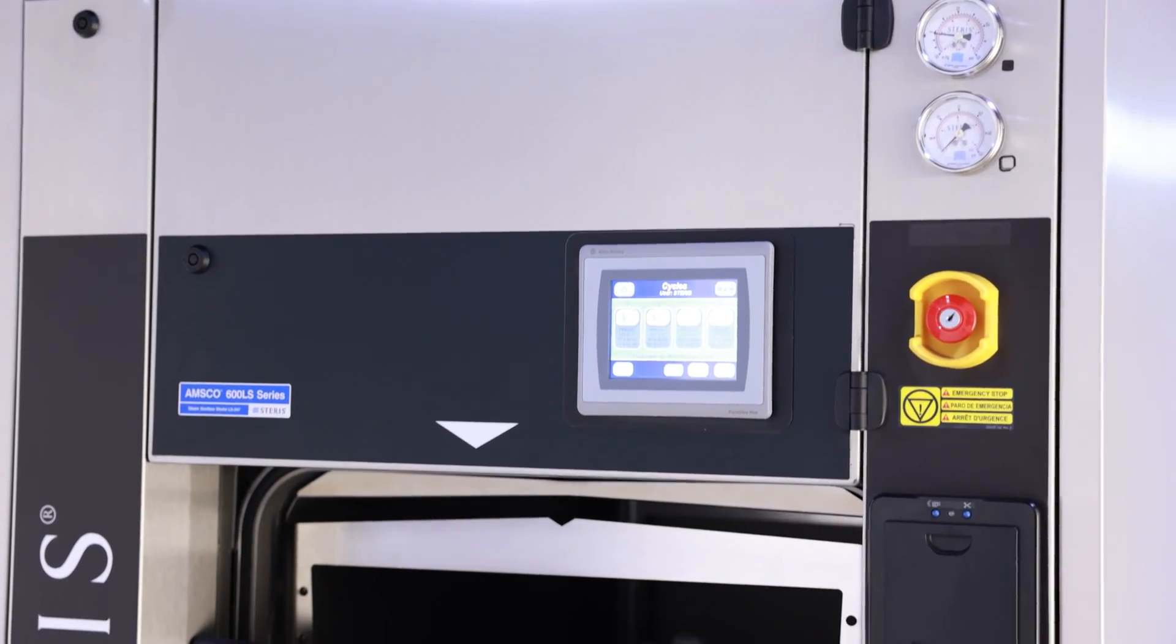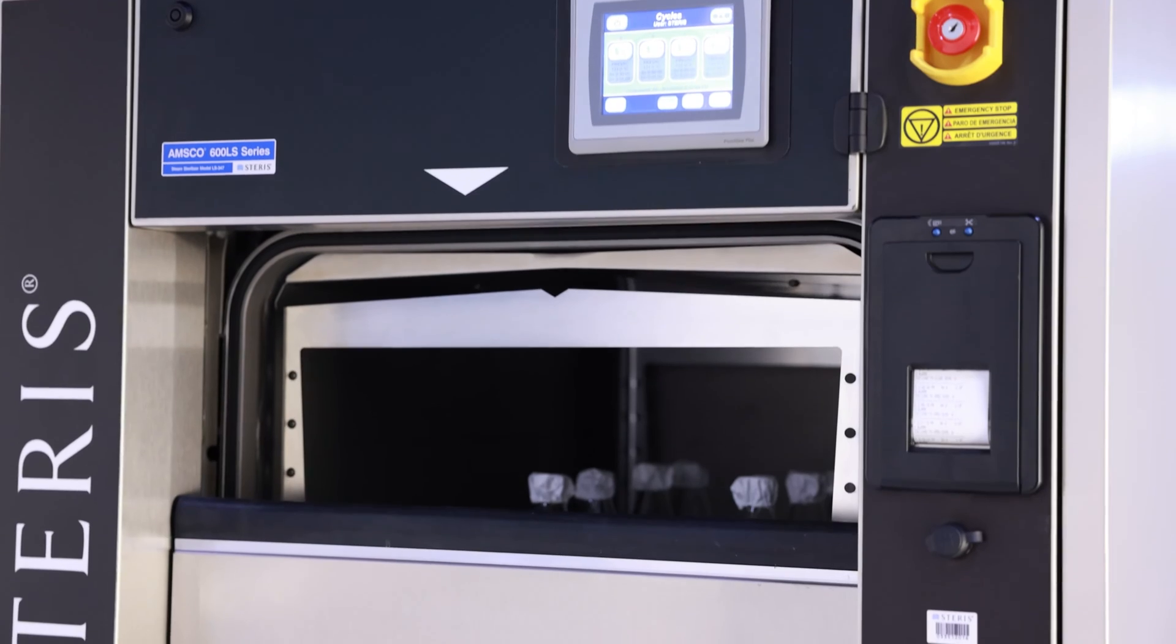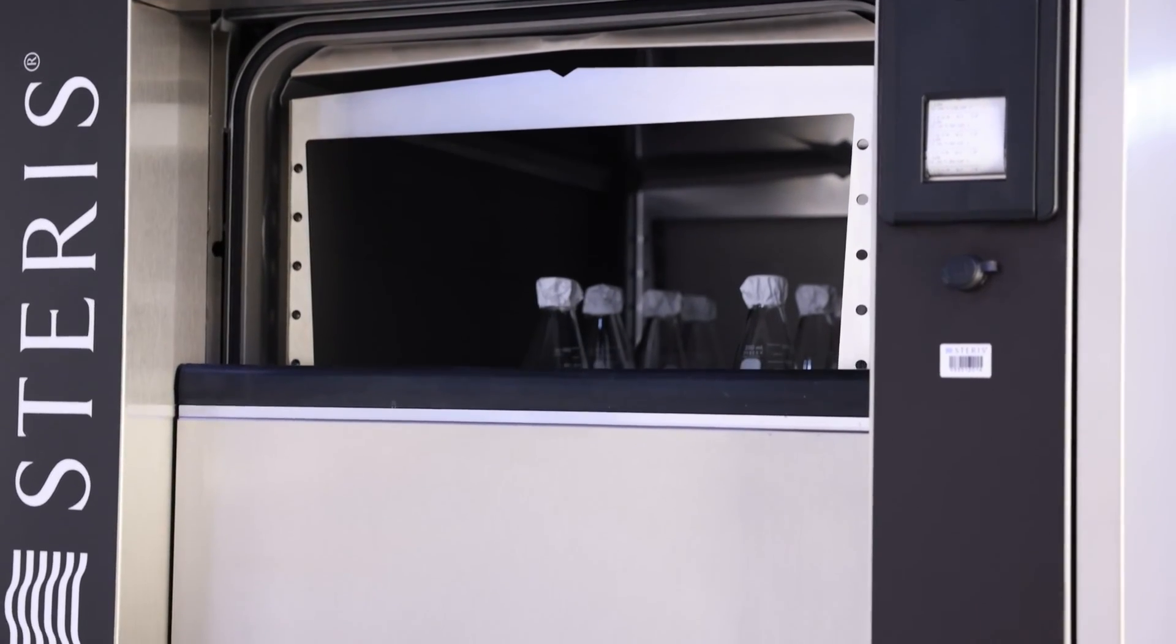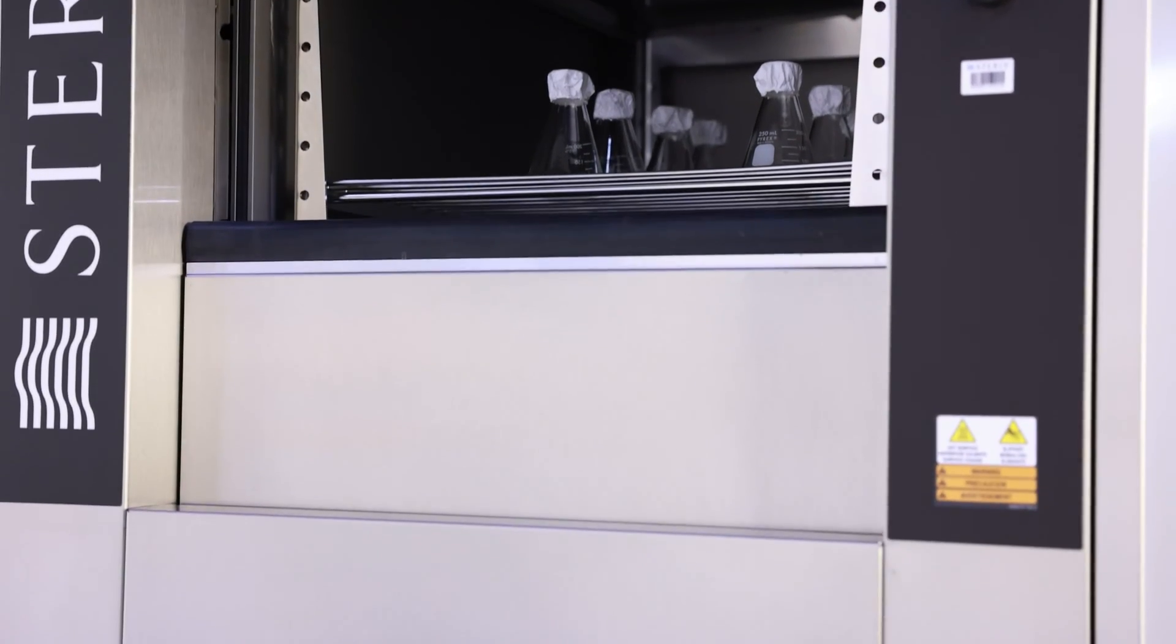The space-saving design of the AMSCO 600LS allows for easy loading and its sleek vertical doors eliminate the need for installation and service side clearance.